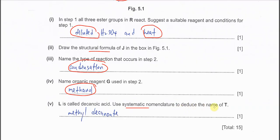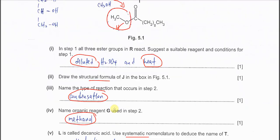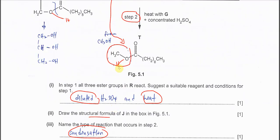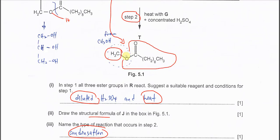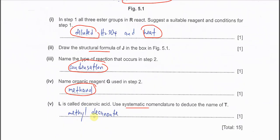L is called decanoic acid. Using systematic nomenclature to deduce the name of T: the methyl group comes from methanol, so combining methyl with decanoic acid gives methyl decanoate. That is the ester name. That is all for this question. Thank you.